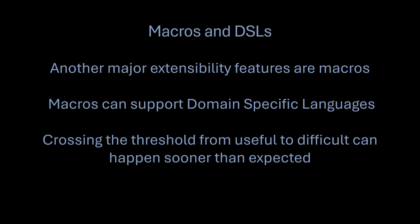Another more powerful but potentially dangerous extensibility notion is macros and domain-specific languages. Racket is really the language that does macros best — it's a core feature and an environment that supports developing domain-specific languages, which are entire codebases supported by Racket macros. There's some support in other languages like Rust, but not nearly as much. Crossing the threshold from useful to difficult happens a lot sooner than expected, which is why this isn't adopted widely.